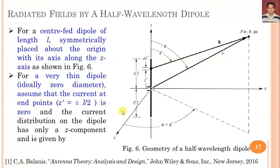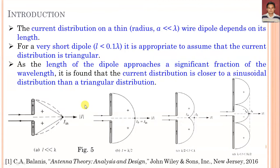Similar analysis was discussed in lectures 1 and 2 of this series. The origin and observation point are defined with angle theta and distance R from origin to observation point. It is assumed that for a very thin dipole of ideally zero diameter, the current at the endpoints at minus L by 2 and plus L by 2 is equal to zero. As seen in the figure for L equal to lambda by 2, the current is zero at endpoints and maximum at the center feed.